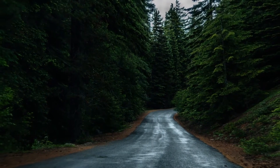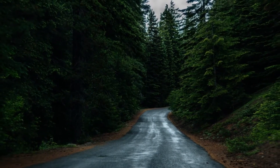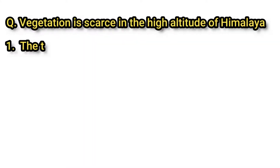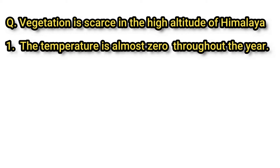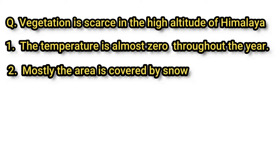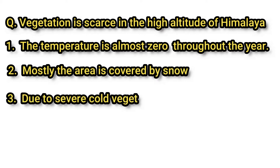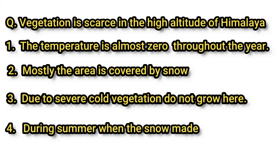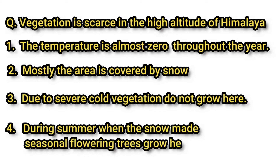At very high altitude in the Himalayan region, the temperature is almost zero throughout the year and the area is mostly covered by snow. Due to severe cold, vegetation does not grow here. During summer, when the snow melts, some seasonal flowering trees grow. Therefore, in the high altitude region of the Himalayas, the vegetation is very scarce.